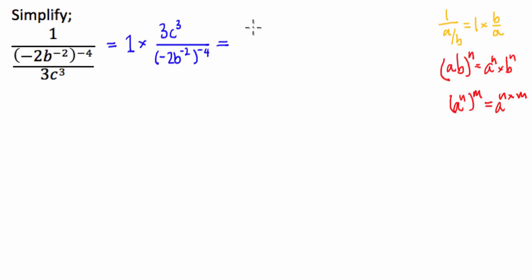So what I do from here, I'm going to keep the numerator as it is, 3c cubed. And then on the denominator, I'm going to keep my negative 2 inside a bracket for a second, negative 2 all to the power of negative 4. And I'm going to have b to the power of negative 2 times negative 4 is 8. Great.